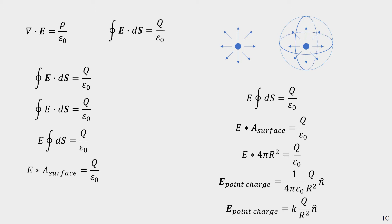You probably might have seen this also using k as 1 over 4π epsilon naught, but either form is equivalent.